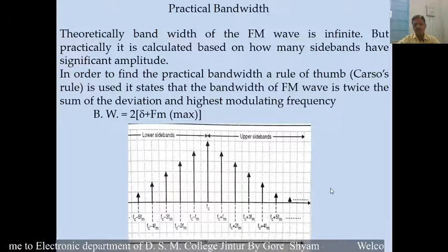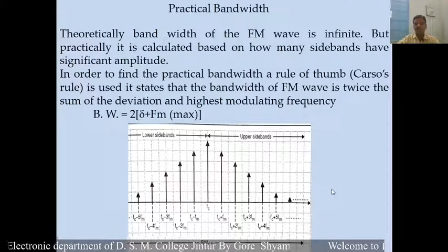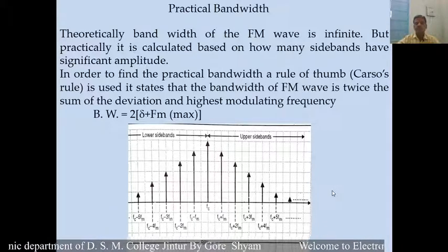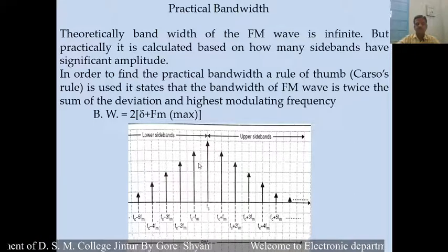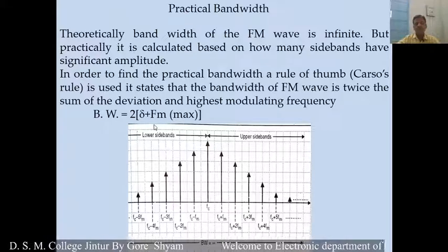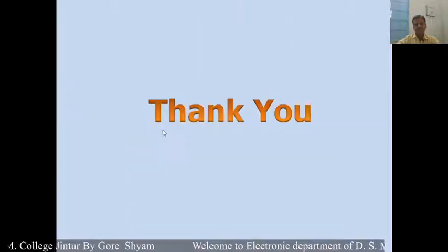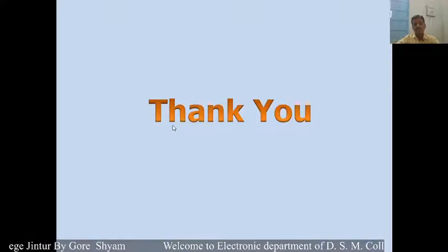A number of frequencies are present in the frequency modulated carrier wave, but the useful frequencies are very few. So the bandwidth is equal to 2 times (Δf + fm). Thank you for watching this video.